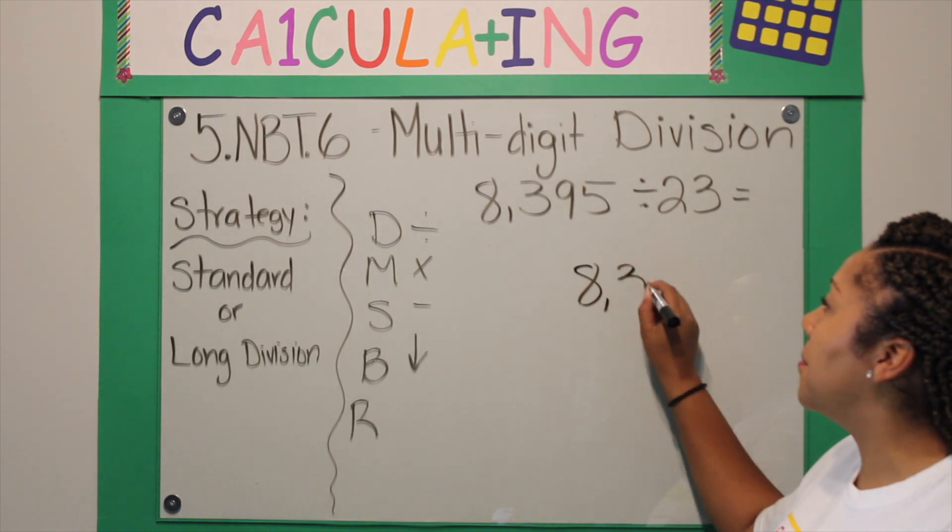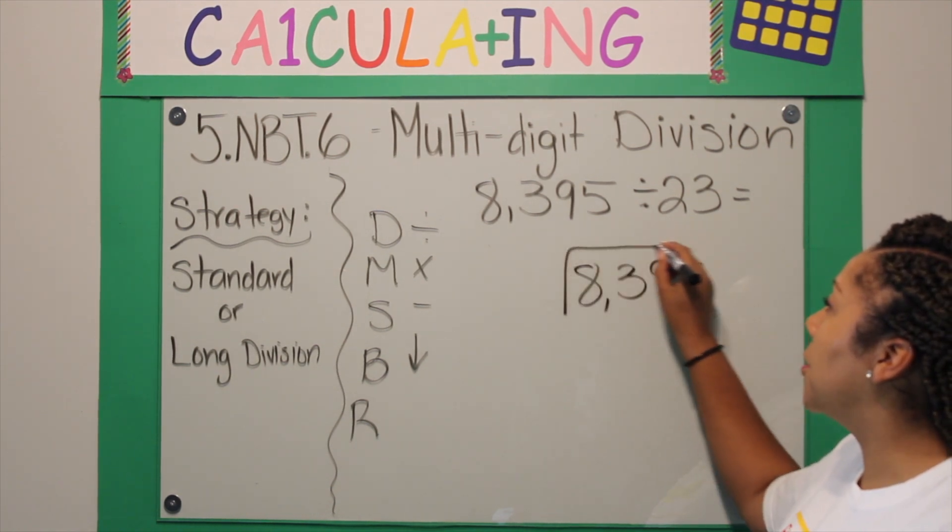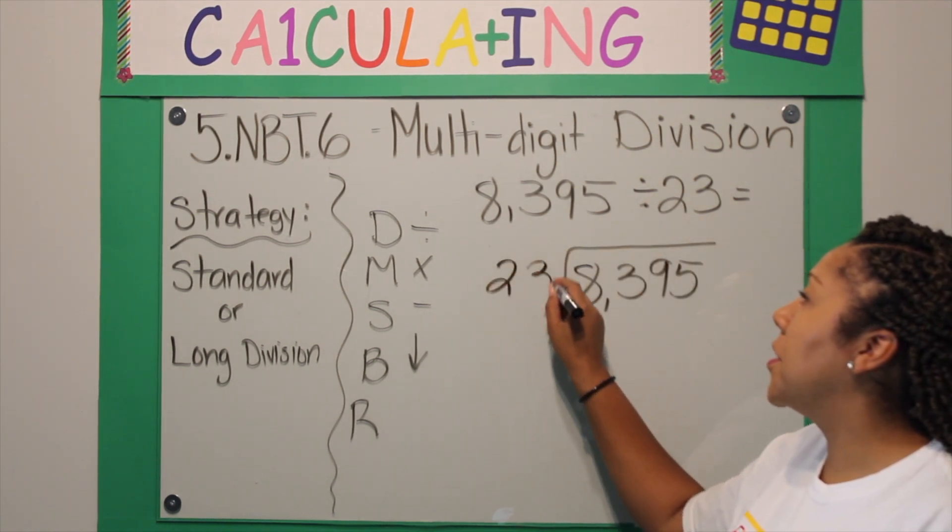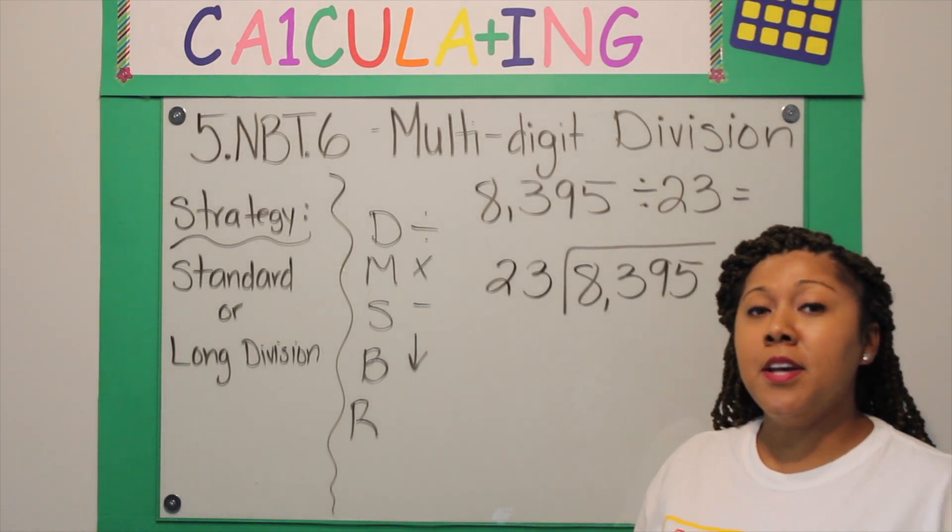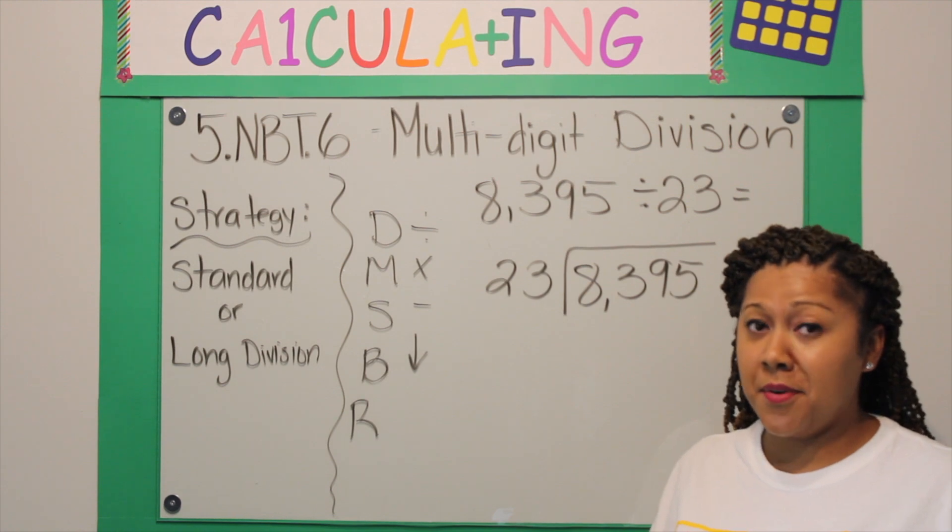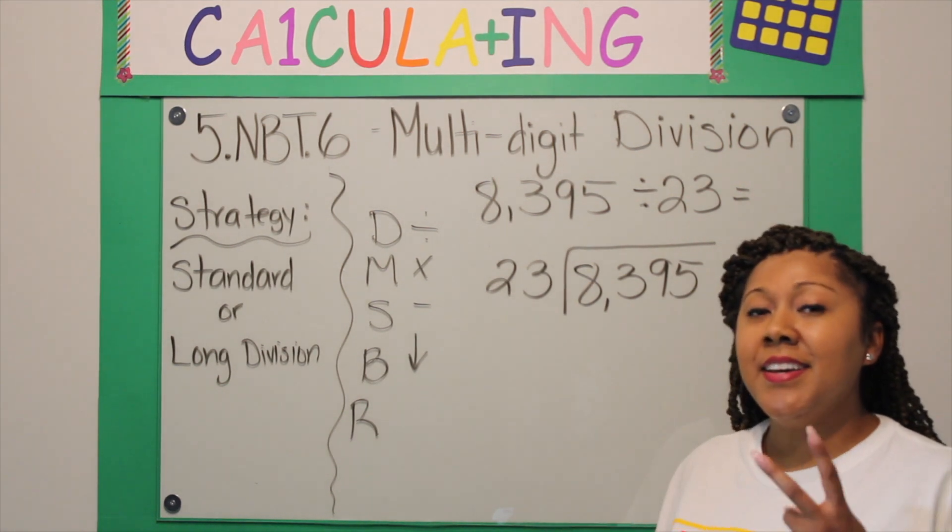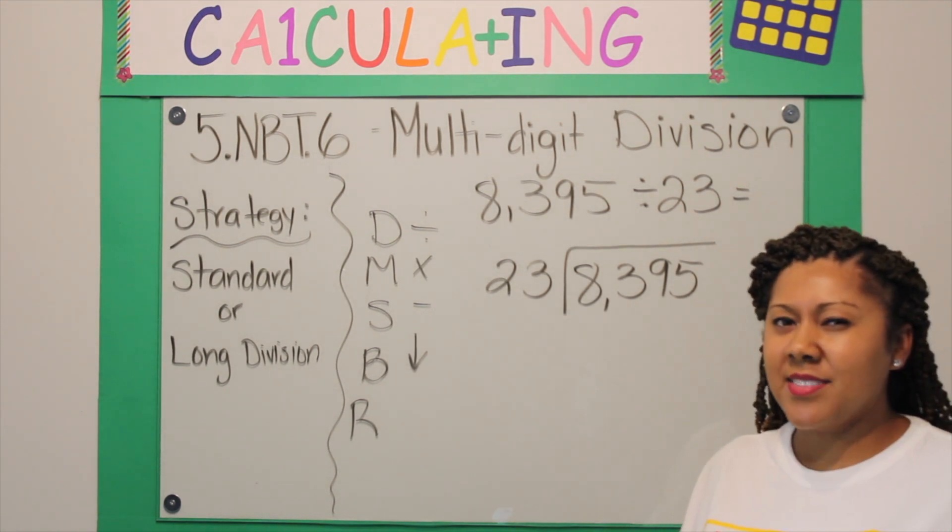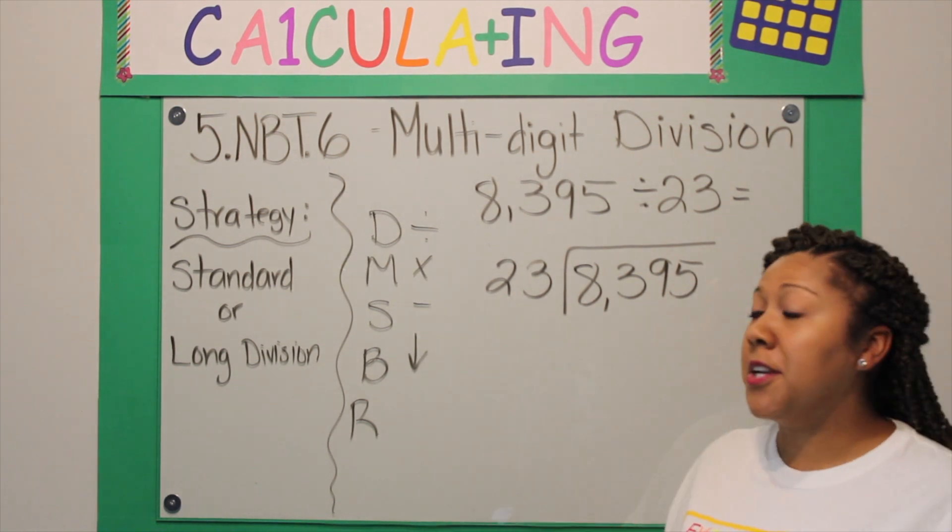The first step is you want to take your large number, which is called your dividend - it's how many total things you have - and then 23 is your divisor, and you're going to put that on the outside. This is a little bit more difficult than fourth grade because in fourth grade this was a one-digit divisor. Now that it's two, and we typically don't know our multiplication facts at the top of our head after 12, here we're going to use multiplication to help us with our division.